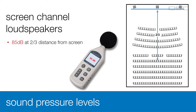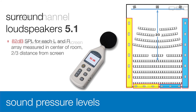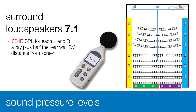Let's look at the basic SPL targets for each loudspeaker type, starting with these. For each screen channel, the level should be set to achieve 85 decibels C-weighted at the two-thirds distance from the screen. For surrounds in a 5.1 system, each left and right array should be set to 82 decibels. For a 7.1 system, the left side channel plus the left rear channel, and right side plus the right rear channel, should also be set to 82 decibels.